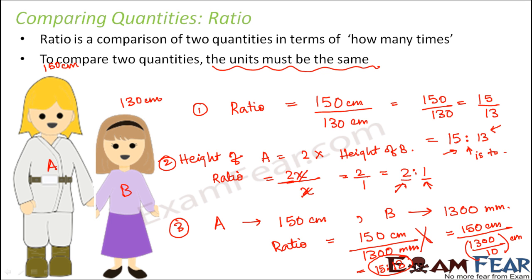So what is ratio? Comparing two quantities in terms of how many times. It is denoted by the symbol is to and most importantly, for comparing any two quantities in a ratio, their units must be the same. Even if they are not same, convert them such that they are same.